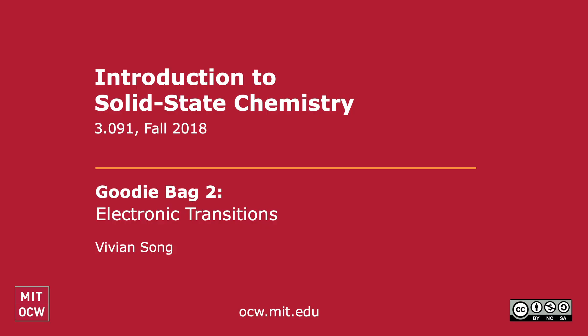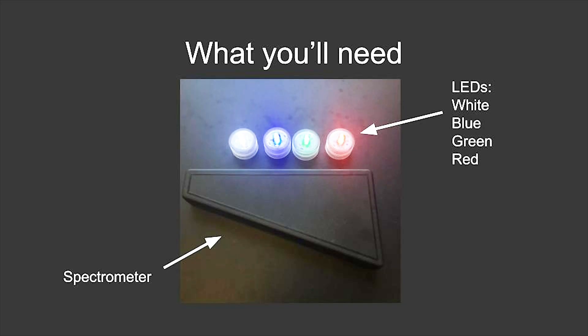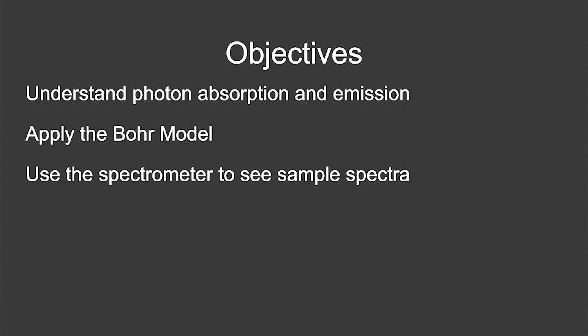In this video we will be going over goodie bag number two, which is about electronic transitions. What you'll need are four LEDs: white, blue, green, and red, and one spectrometer. The objectives in this video are to understand photon absorption and emission, apply the Bohr model, and use the spectrometer to see sample spectra.